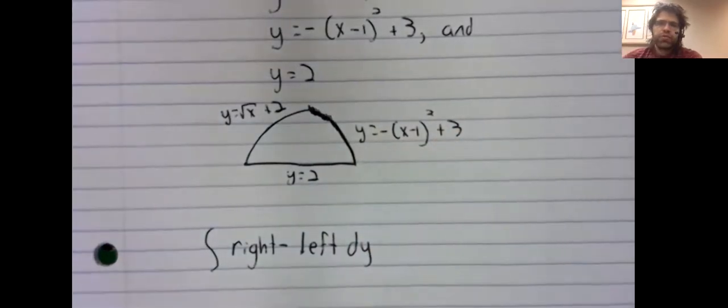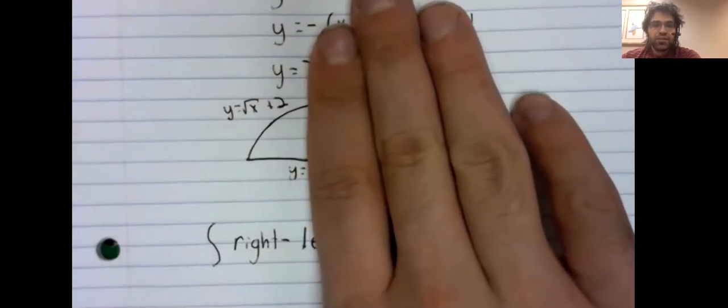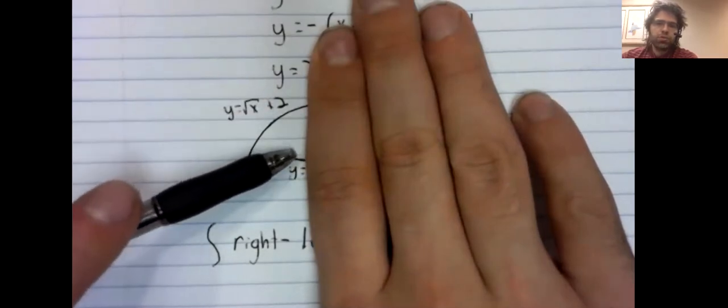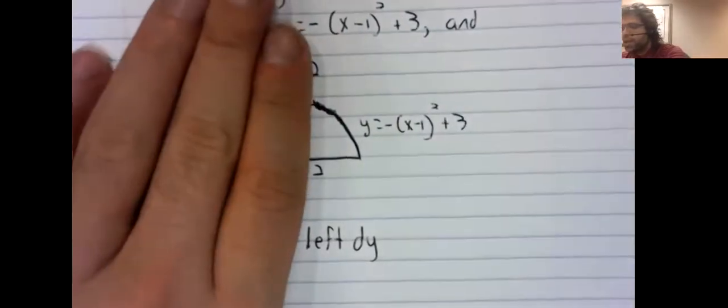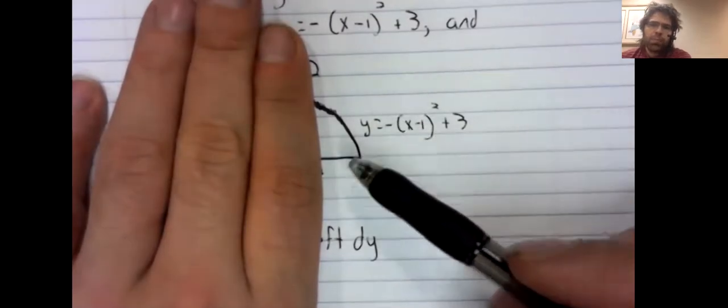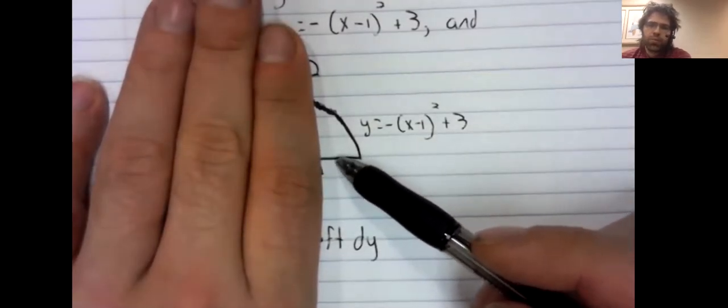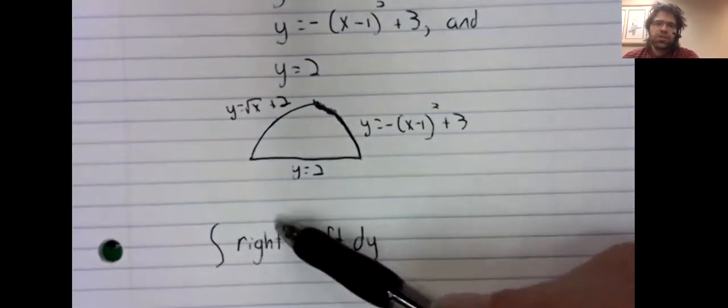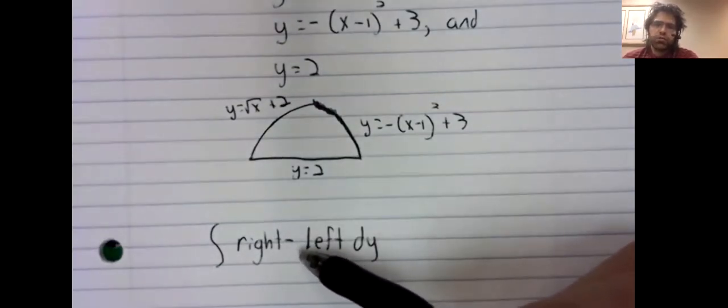If we wanted to use vertical rectangles, it would be possible, but we would have to set up two integrals. We could find this area where the square root is on top and y equals two is on the bottom, and add them together. This lets us use one rectangle, one integral, instead of two.